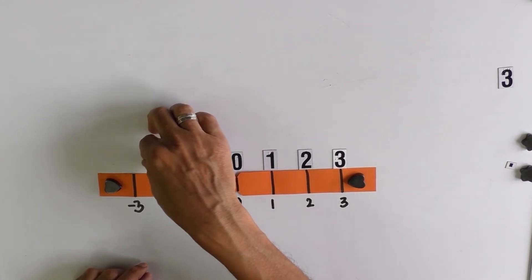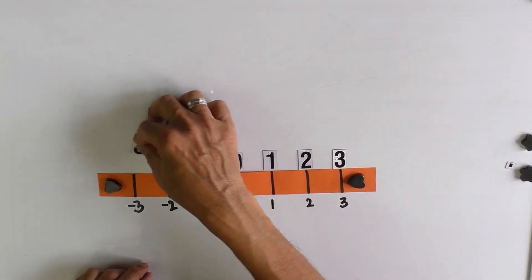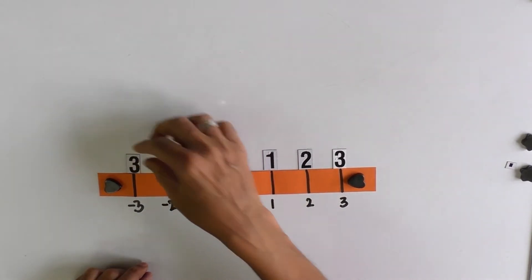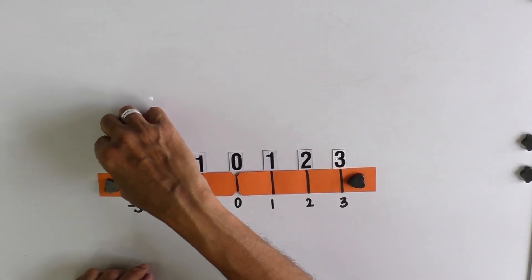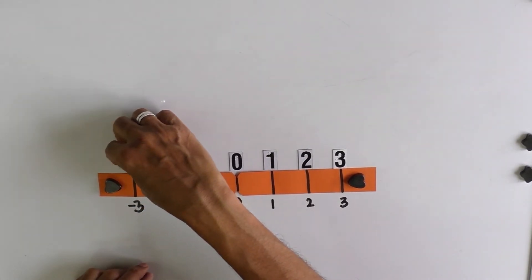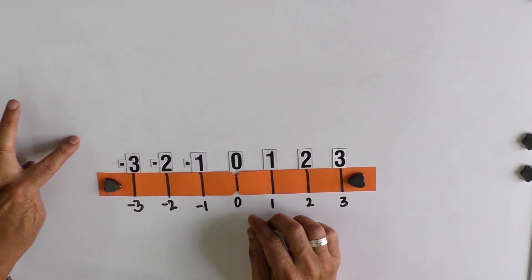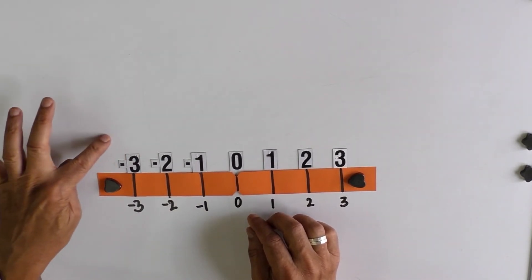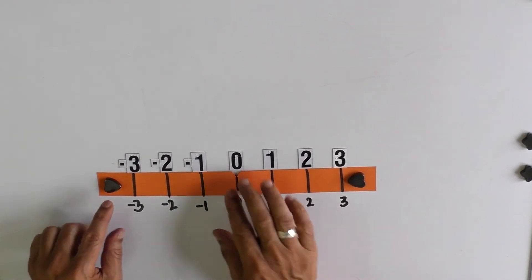So we have put 1, 2, 3 and the minus sign before. And again we have to develop the concept that on the negative side, the number line goes to infinity.